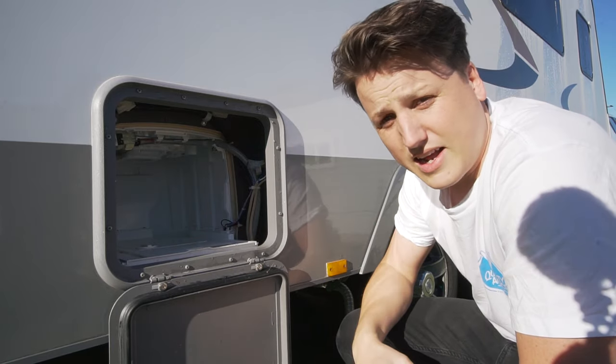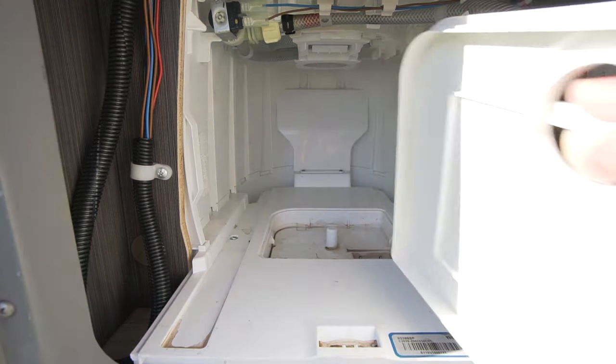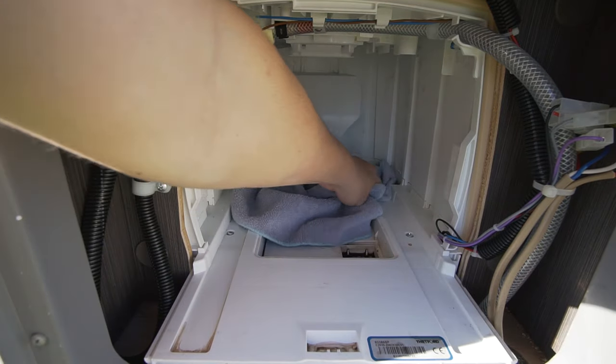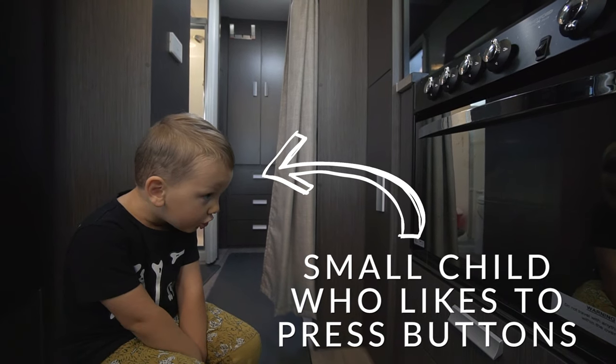So another thing that will contribute to water being in that little area is if you're like us and you travel with small children that like to push buttons. Harvey will often flush our toilet when the cover is shut and the water will pool on that top of that rubber cap on the cassette and actually flow over the side and down into that little tray there. So it does pay for us to check that from time to time and you might find if you travel with small children that you might have some water in there too.